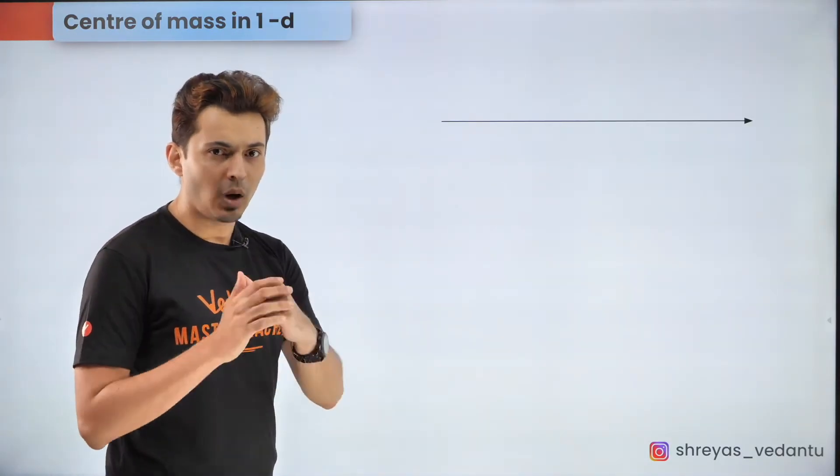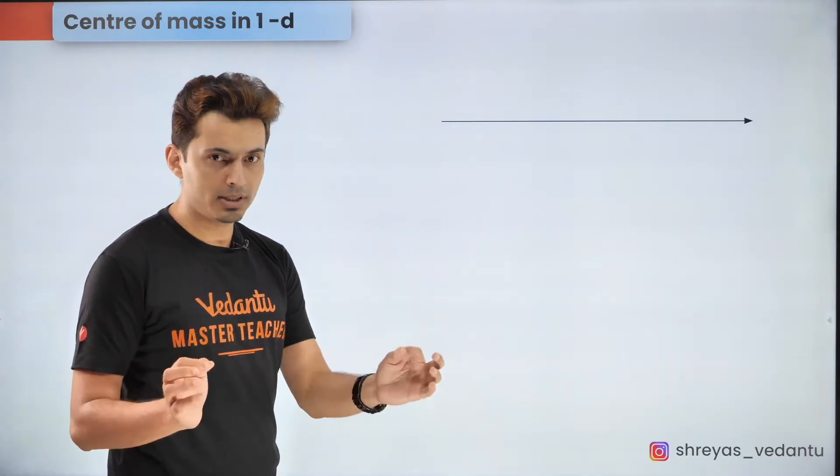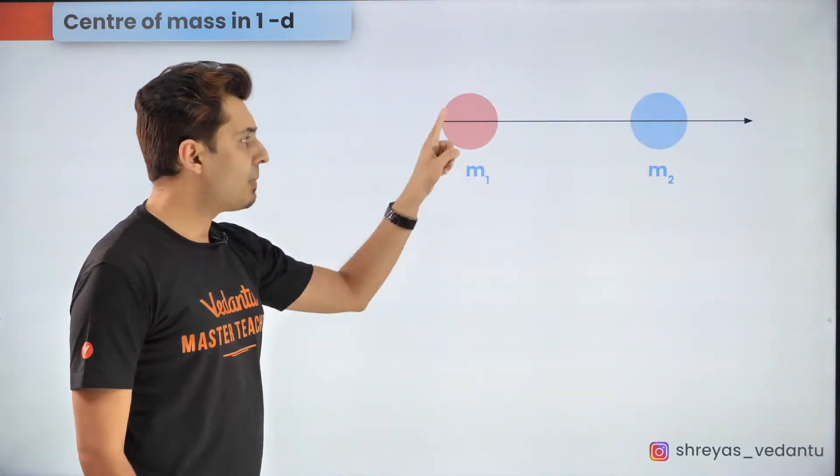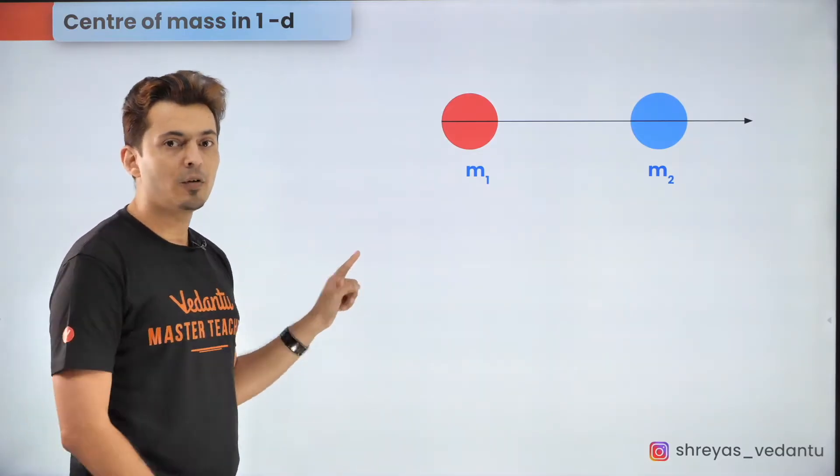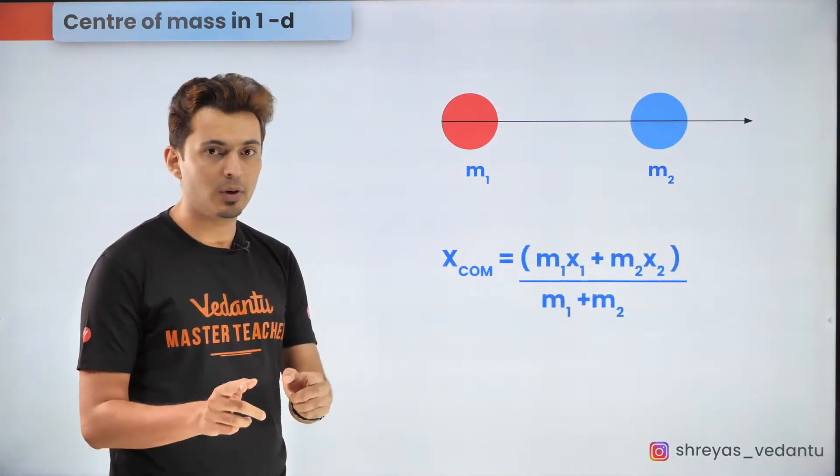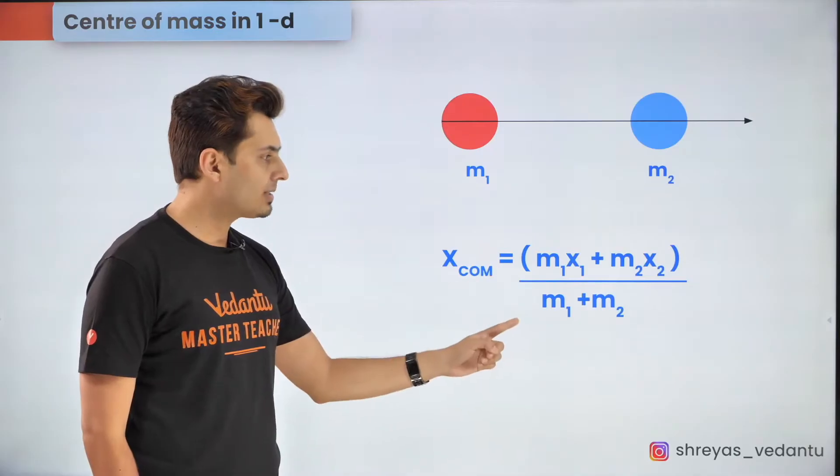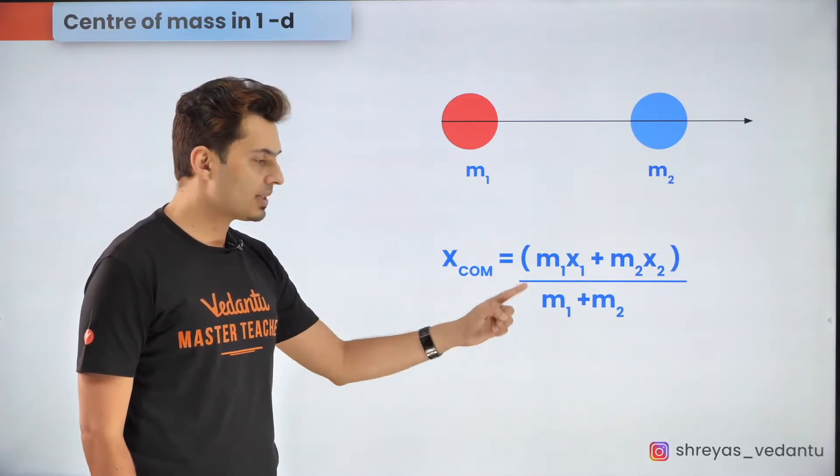If you want to find the location of the center of mass of two point objects all you need to know is the masses and their locations. The coordinate of the center of mass is given by a weighted average formula which is m1 x1 plus m2 x2 upon m1 plus m2.